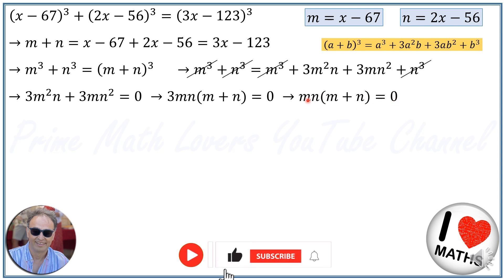Now we can rewrite this in terms of x, so replace m with x minus 67, replace n with 2x minus 56, and replace m plus n with 3x minus 123. So we will have (x - 67) times (2x - 56) times (3x - 123) is equal to 0.